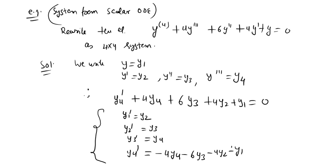This is a 4 by 4 system in four unknowns: y1, y2, y3, and y4. In that way, mathematically you can form a system from a higher-order scalar equation or from higher-order systems.